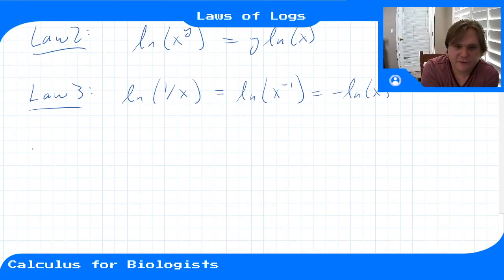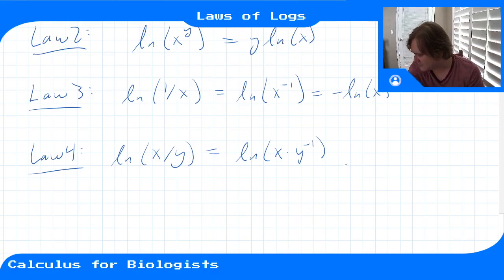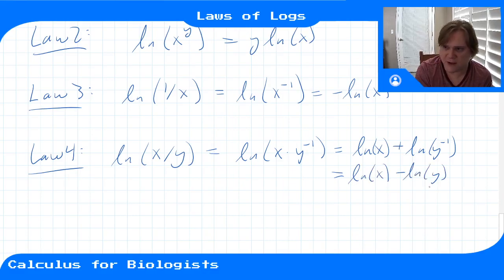Okay, and then law number 4 says ln(x/y). You can think of that as ln(x times y^(-1)). So we're basically applying laws 1, 2, and 3. We're applying all the previous laws for this one. So this gives us ln(x) minus, so maybe I'll do the intermediate step, ln(y^(-1)), and then that becomes minus ln(y). So I'm basically applying all the previous laws for this specific case.